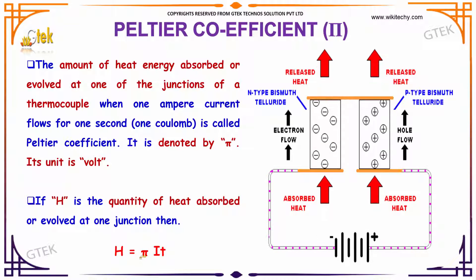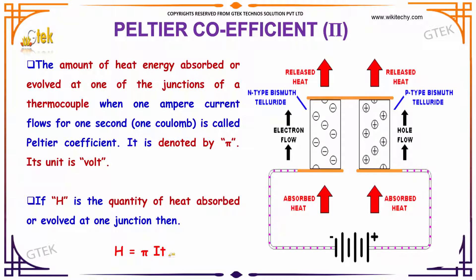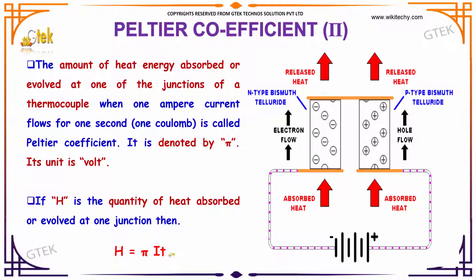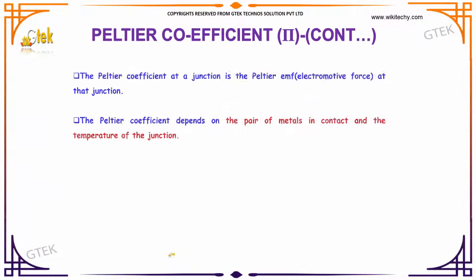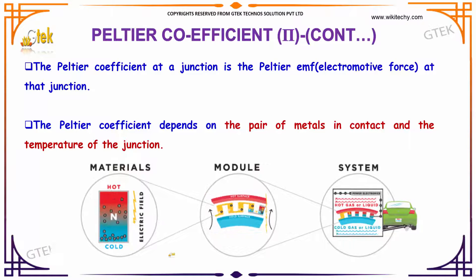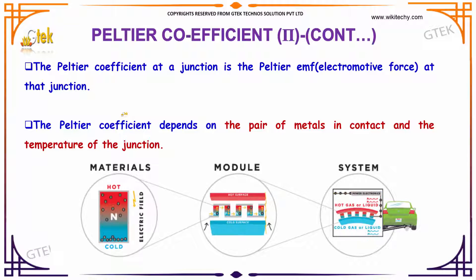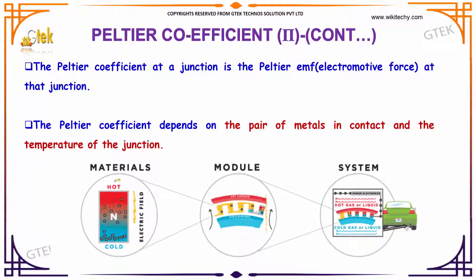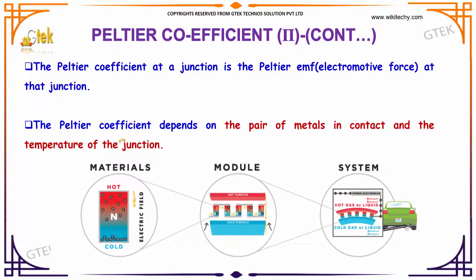H, the heat generated, is directly proportional to the current and time. The Peltier coefficient of the junction is nothing but the Peltier electromotive force at that junction. The Peltier coefficient depends on the pair of metals in contact and the temperature of the junction.